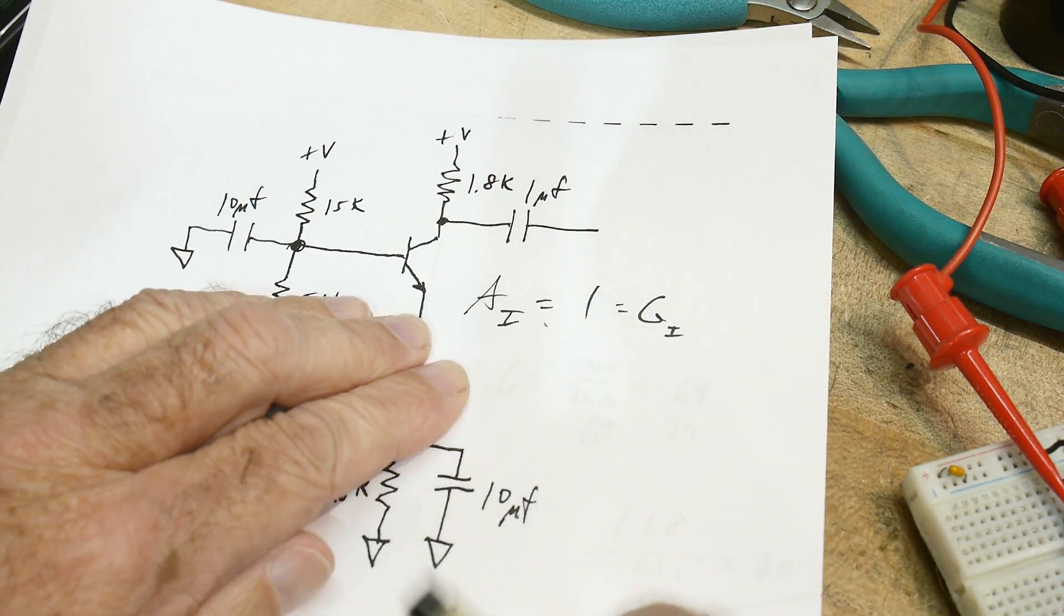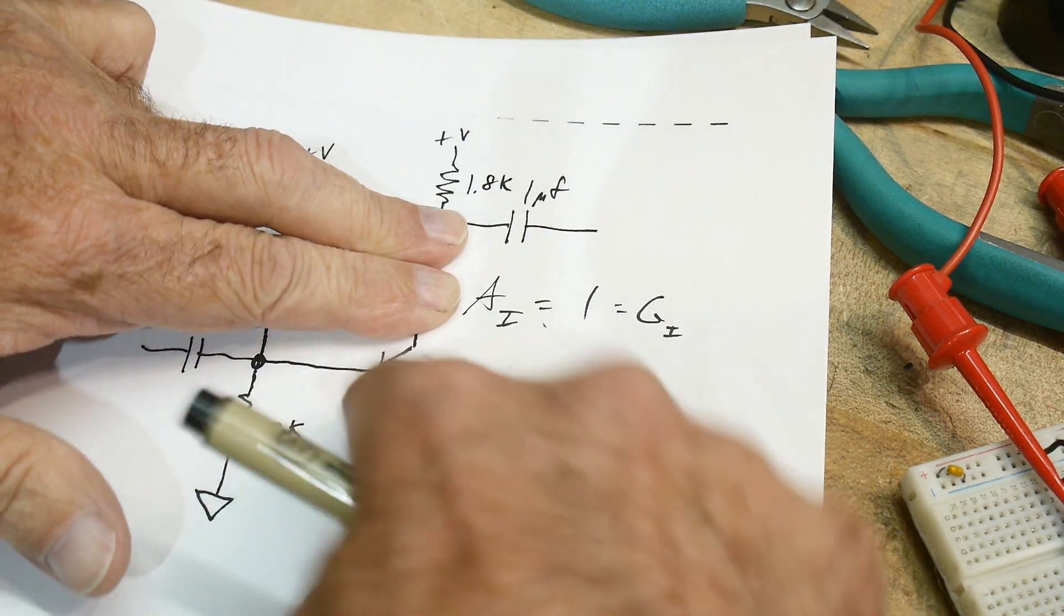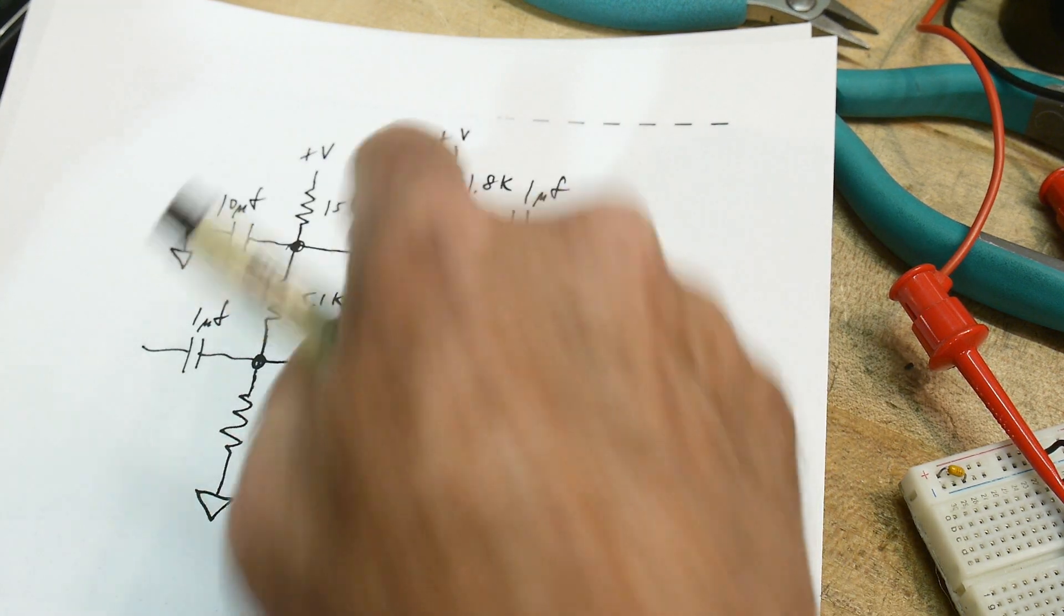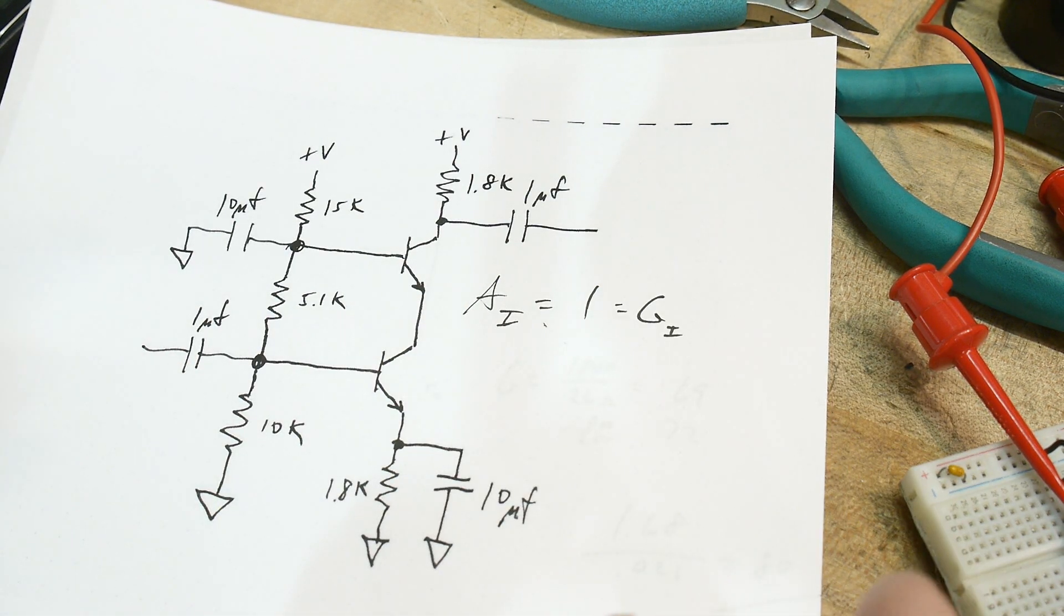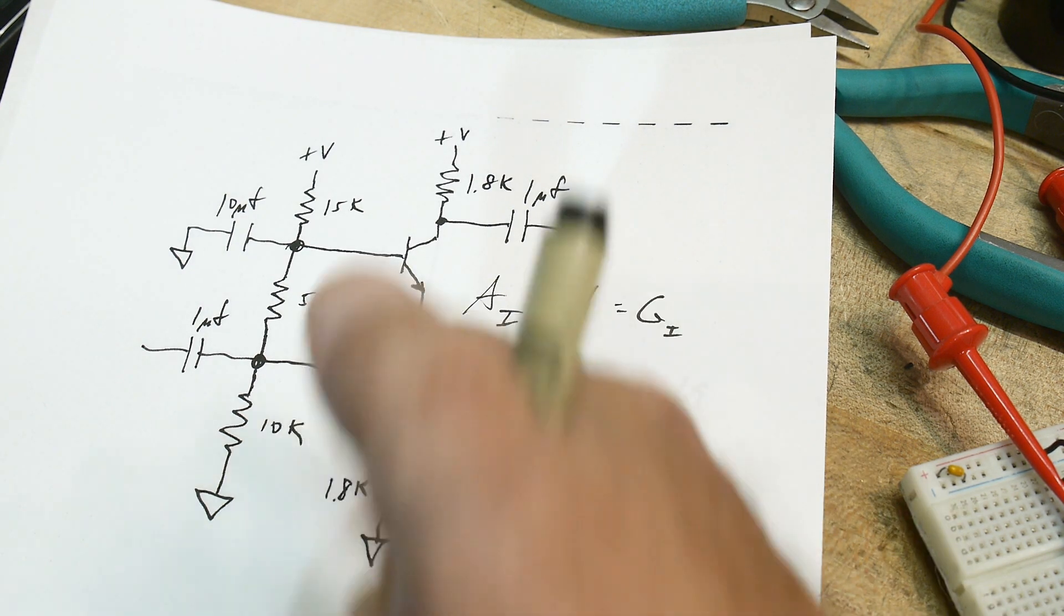So really, the gain, when you calculate it for a cascode amplifier, the gain is caused by this transistor. If it's not there, it's caused by that transistor. If it is there, it's caused by that transistor, and this transistor really doesn't do a lot with respect to gain.